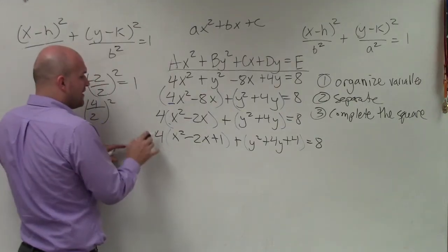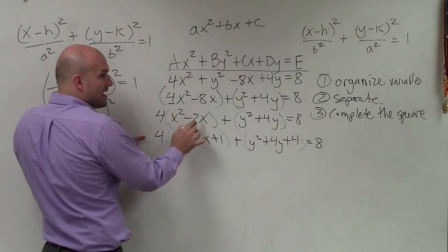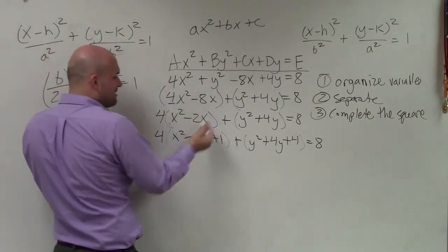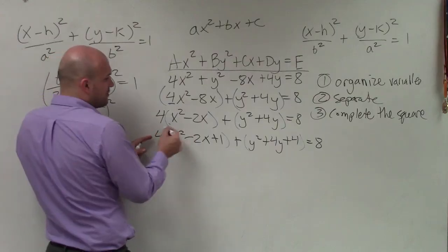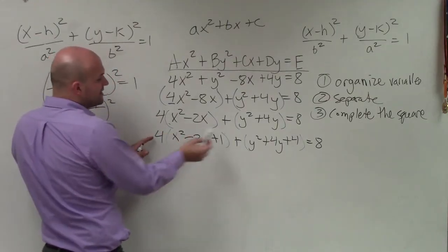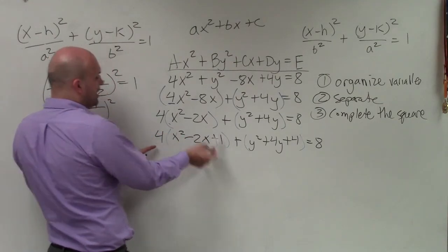whenever you factor out a 4, that 4 is still multiplied back through, right? I just factored it out. But you need to make sure you understand that 4 is still being multiplied by all these terms. So I really didn't add 1 here. I actually added 1 times 4.